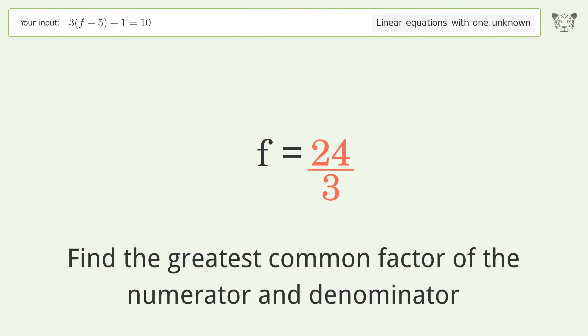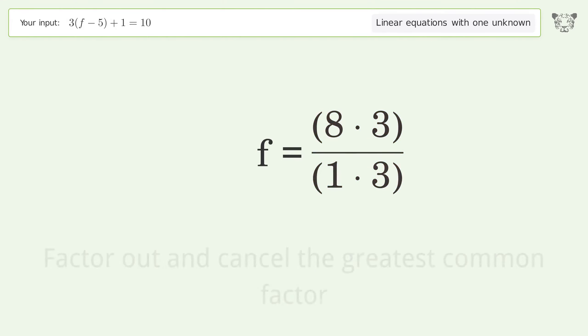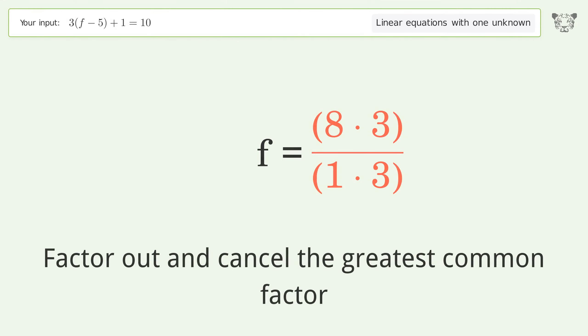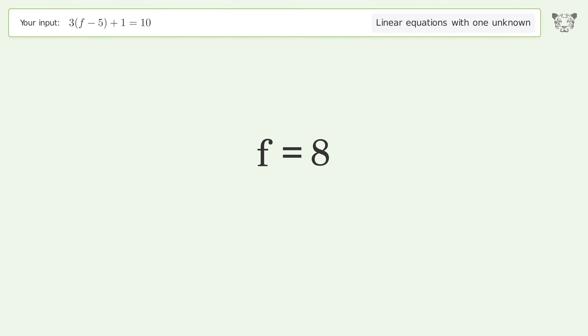Find the greatest common factor of the numerator and denominator, then factor out and cancel the greatest common factor. And so the final result is f equals 8.